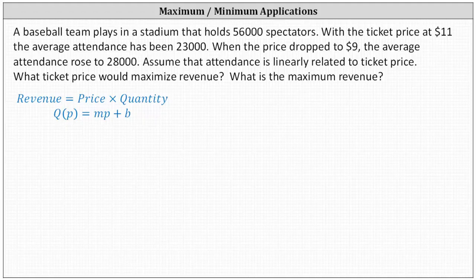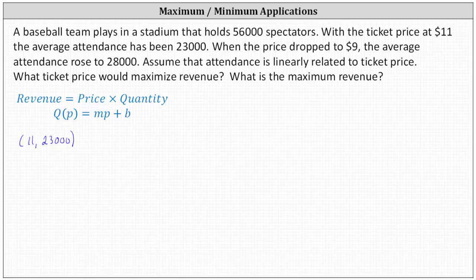To begin, we know when the ticket price was $11, the average attendance was 23,000, which gives us the ordered pair (11, 23,000), meaning when P is 11, Q of P is 23,000. And we know when the price dropped to $9 per ticket, the attendance rose to 28,000, which gives us a second ordered pair of (9, 28,000).